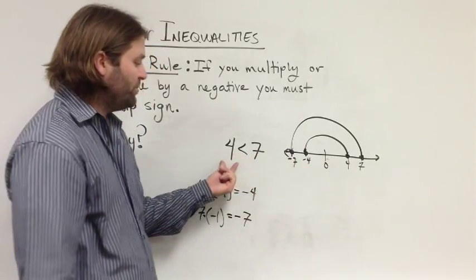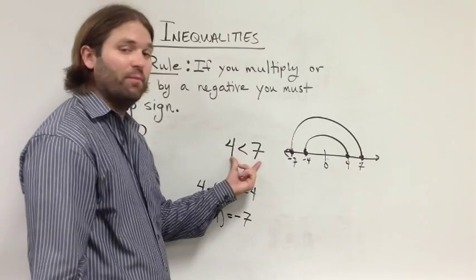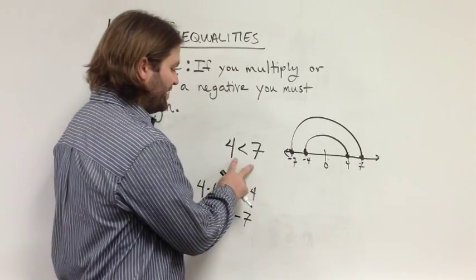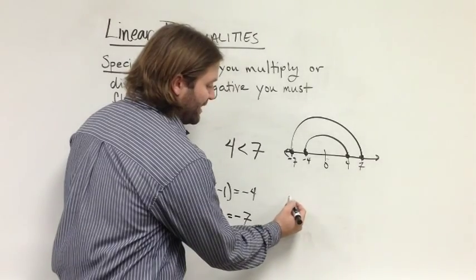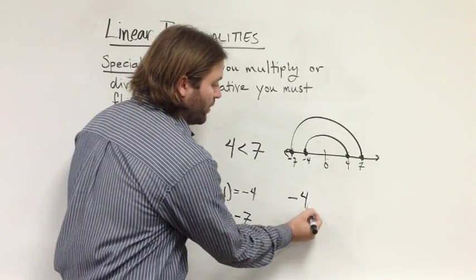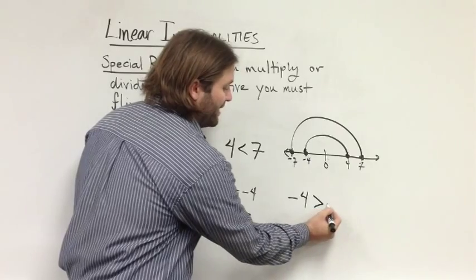That's why, when we multiply both sides by a negative number, we have to flip the sign. And so, in this case, if we took both sides and multiplied by negative 1, we would get that negative 4 is greater than negative 7.